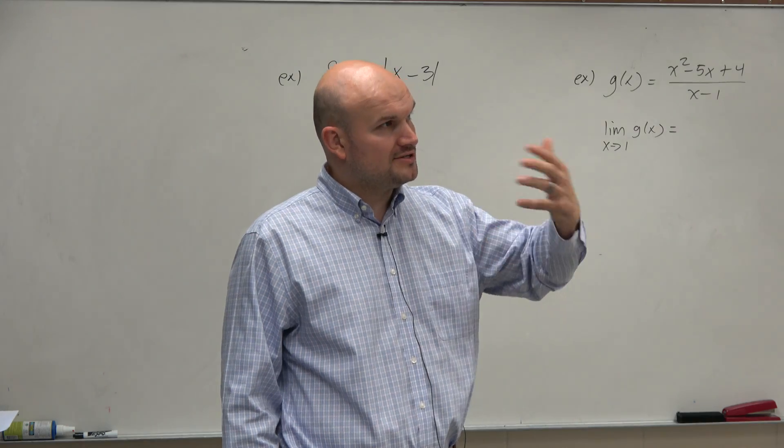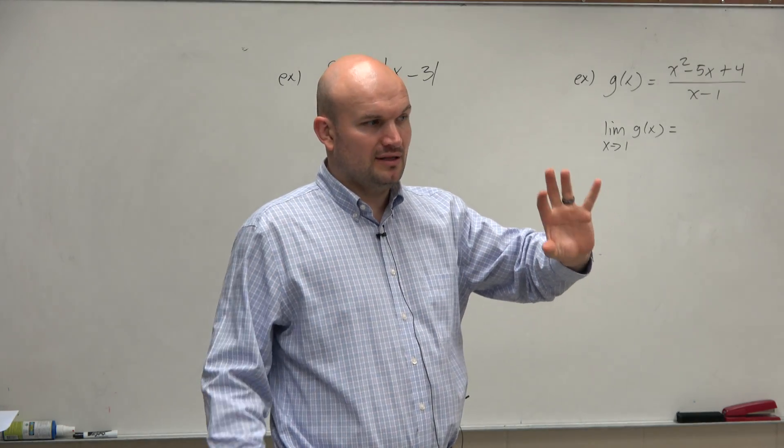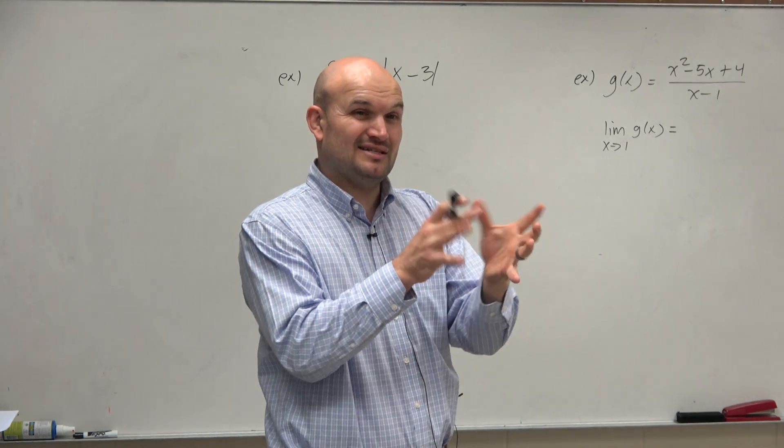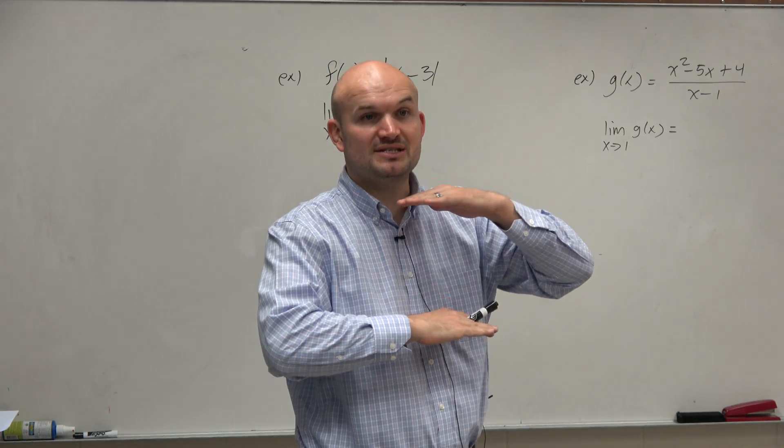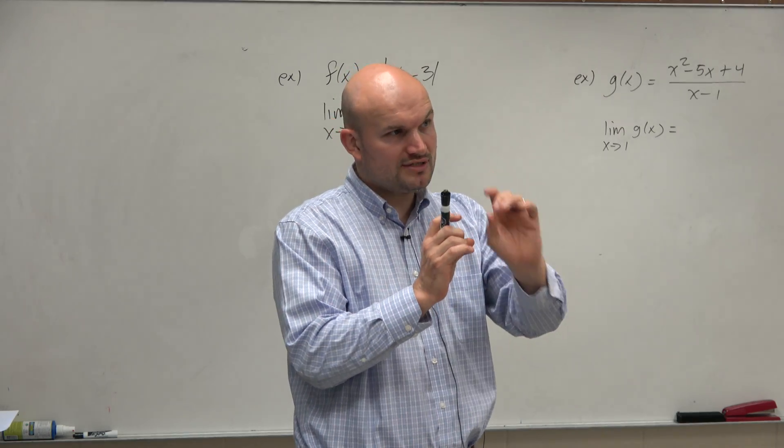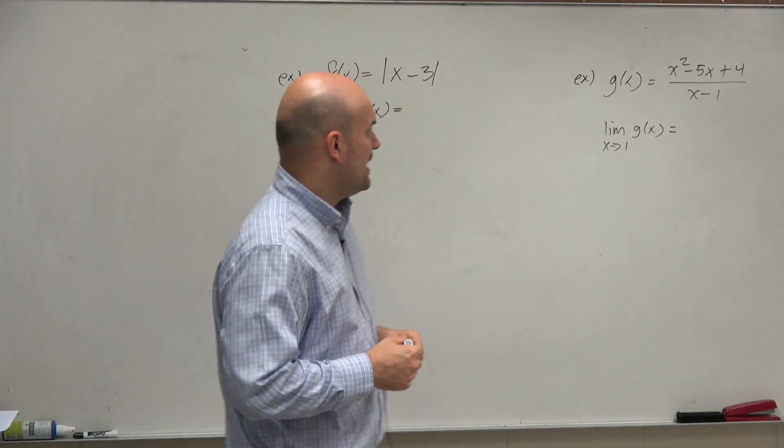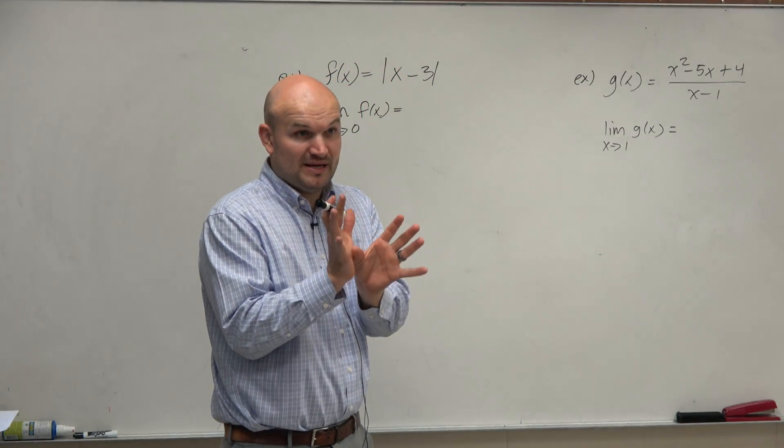Because if you guys remember, when we looked at that graph, there was discontinuities, right? And the only time the limit didn't exist is when the general limit didn't approach from both sides, or we had a jump discontinuity, right? Holes and stuff like that were fine. Or asymptotes could be an issue as well.